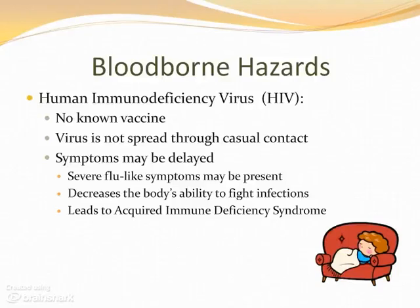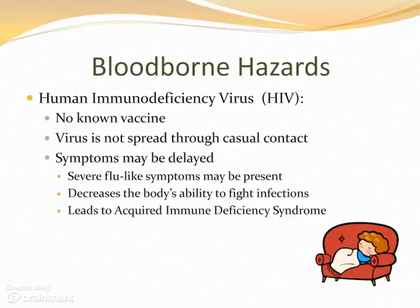Another very serious bloodborne disease is HIV. There is no vaccine for HIV. However, HIV cannot stay alive in dry blood as HBV can. It is difficult to contract in the workplace, as this virus is not spread through casual contacts such as hugging, sharing food, utensils, clothing, bed linens, shaking hands, sharing a restroom, or mosquitoes. If you do have HIV, you may feel severe flu-like symptoms, but symptoms can be delayed for months or even years. HIV decreases the body's ability to fight infection by attacking the immune system, and this can lead to acquired immune deficiency syndrome or AIDS.